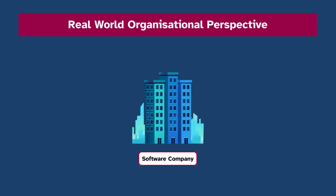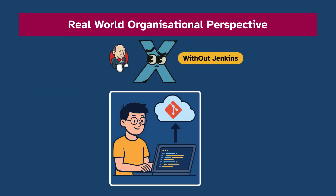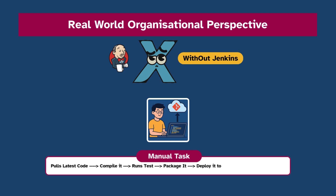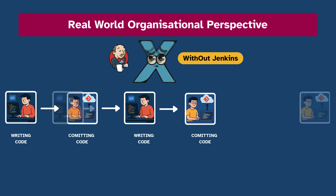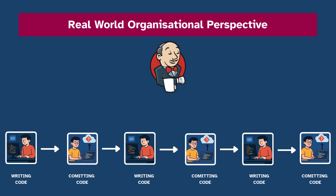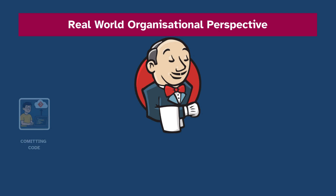Imagine you are part of a software company with multiple teams — developers, testers, DevOps engineers. Without Jenkins, every time a developer pushes code, someone has to manually pull the latest code, compile it, run tests, package it, and deploy it to staging or production servers. Imagine this happening multiple times a day across multiple teams — it becomes slow, error-prone, and chaotic.